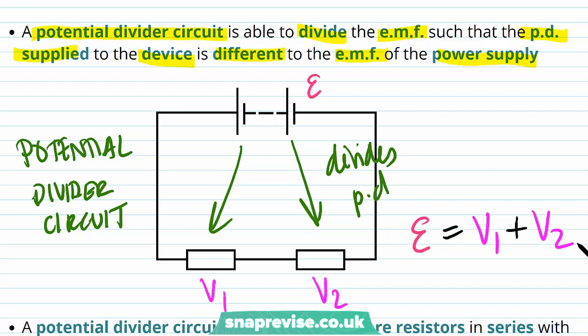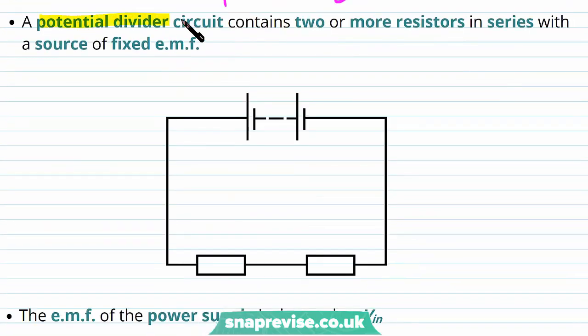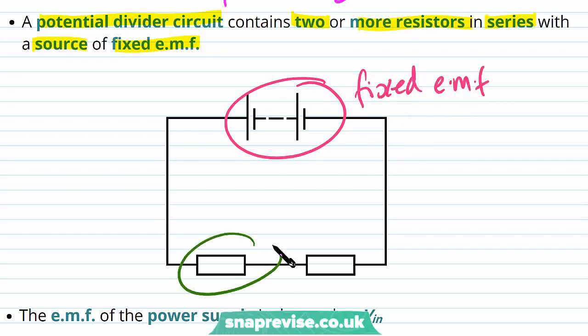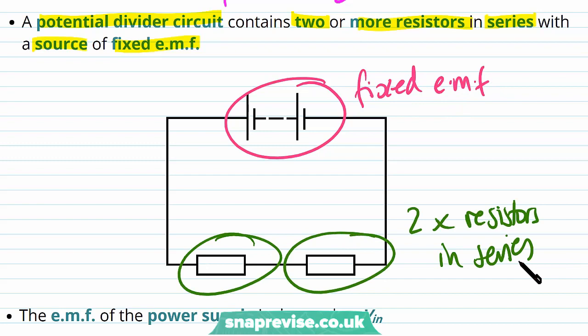Kirchhoff's second law states that in a closed loop the sum of the EMFs is equal to the sum of the potential differences across the components in that closed loop - in this case just V1 plus V2. A potential divider circuit contains two or more resistors in series with a source of fixed EMF. Because these resistors are connected in series, we're able to split the EMF across the two resistors.